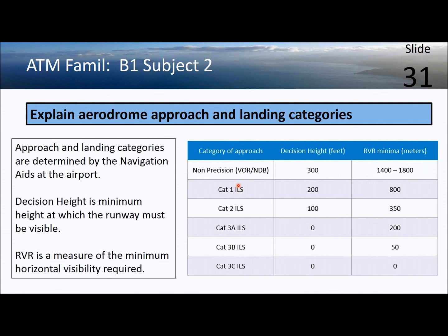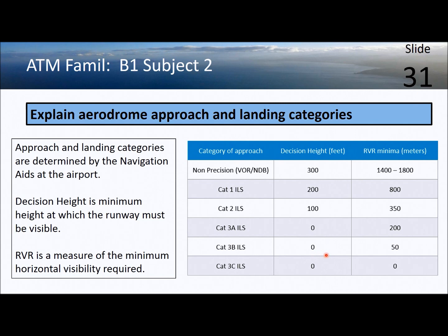Going down through the ILS categories to Cat 3B, the decision height can be zero feet. In other words, an aircraft landing with a Cat 3B ILS can land without seeing the ground until they've touched down, but they do need a forward visibility of 50 meters.